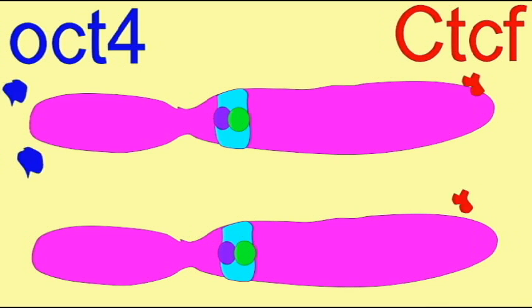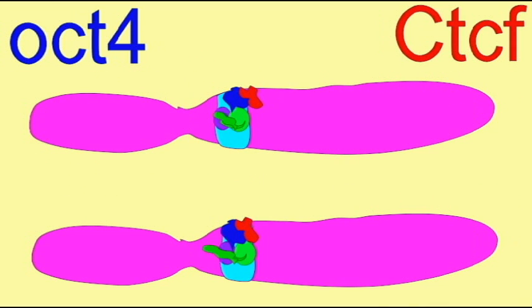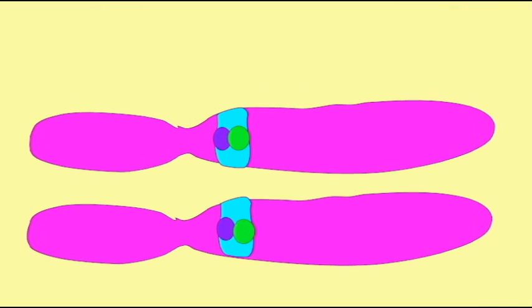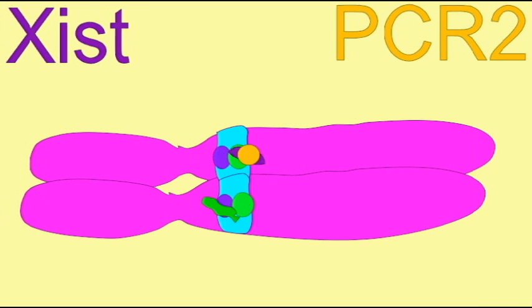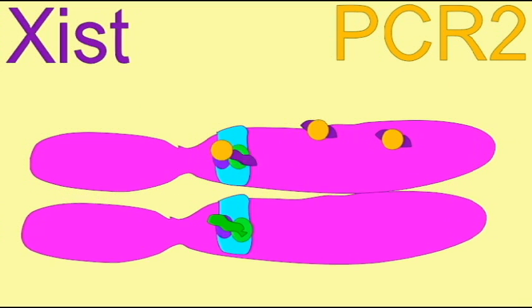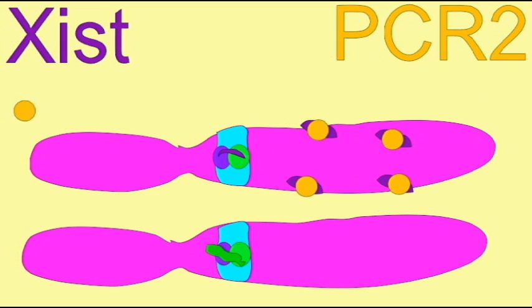When one of these neighboring genes is unwound euchromatin, the other is wound heterochromatin, and Tsix controls the chromatin state of the Xist promoter. Xist is located upstream of Tsix, and its enhancer is regulated by the stage of an embryo's development.